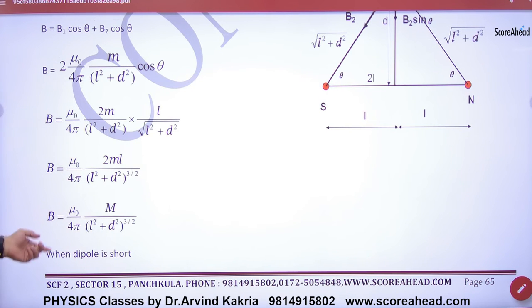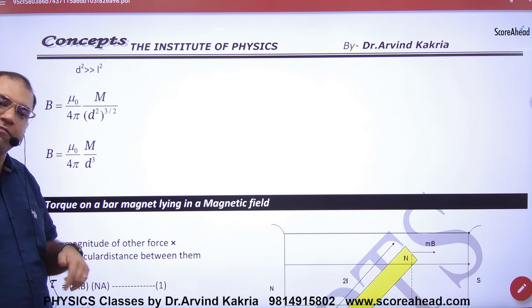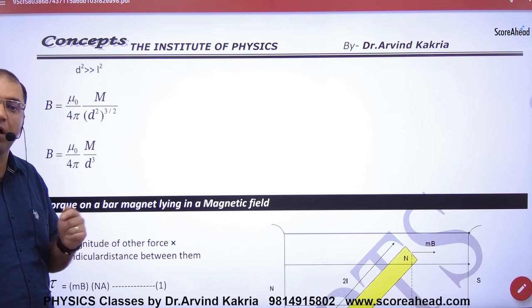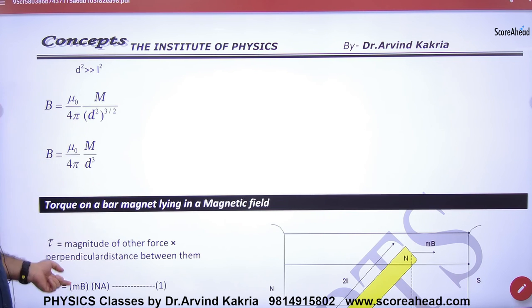And if it is a short dipole where d is greater than L, we will get B equals mu0 by 4pi, M by d-square. You will remember that in electrostatics we also had this result. Axial line was 2M by d-cube. On equatorial line, this result is M by d-cube. Right?